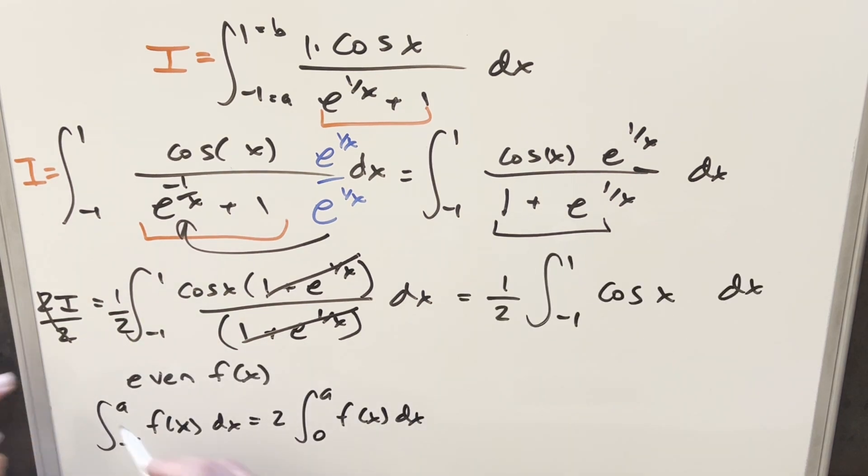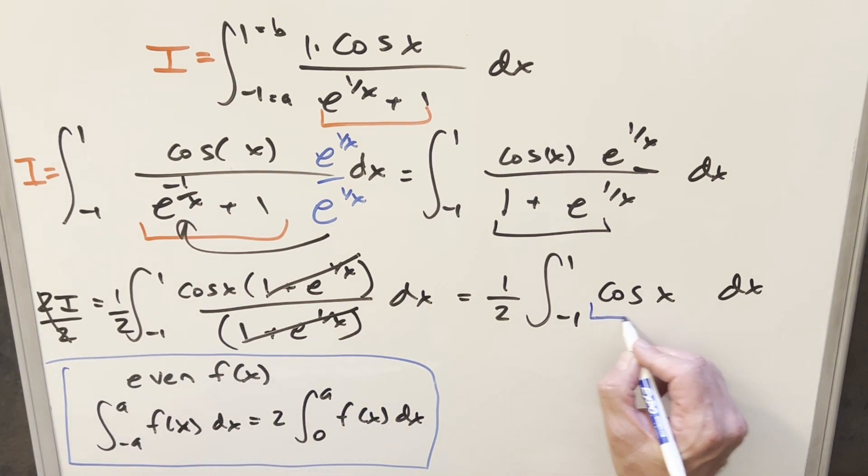And then at this point we can use this principle I have over here to the left, which is that if our f of x is an even function, which works here because cosine is even, and we have our bound symmetric around 0, just like minus 1 to 1, so this principle works, it's going to allow me to bring a 2 out front of the integral and reduce the lower bound to 0.